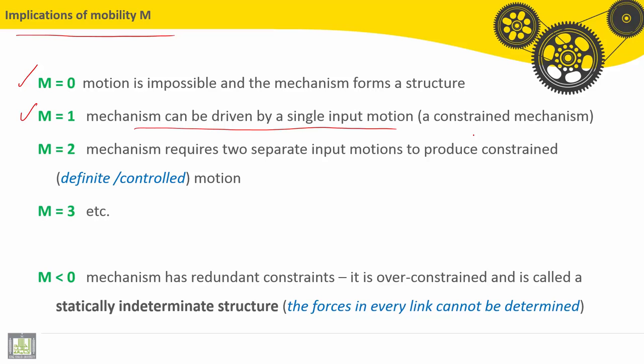So here it can be driven by rotary input or translation input. If M equals two, the mechanism requires two separate input motions to produce constrained, that means defined or controlled motion, and so on.